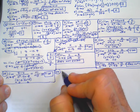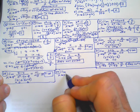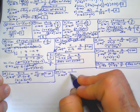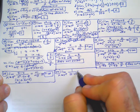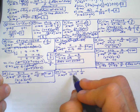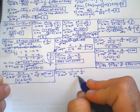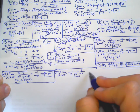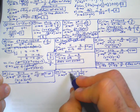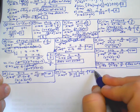Number 27: limit as X approaches 2 from the right of 1 over the absolute value of (2 minus X). This is going to be 1 over 0. We're approaching 2 from the right, so that's like 2.001, making (2 minus X) a negative small amount. You might think that's negative infinity, but you're taking the absolute value of it, so that forces it to be positive — it ends up as positive infinity.